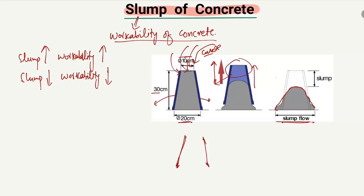We determine the slump as how much the concrete decreases from its original height. The original height was the height of the cone, and now it has decreased to a certain value. This decrease in height is known as the slump of the concrete.